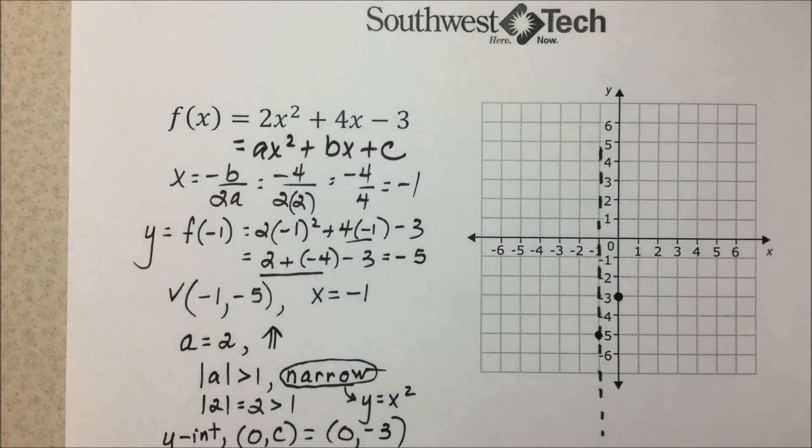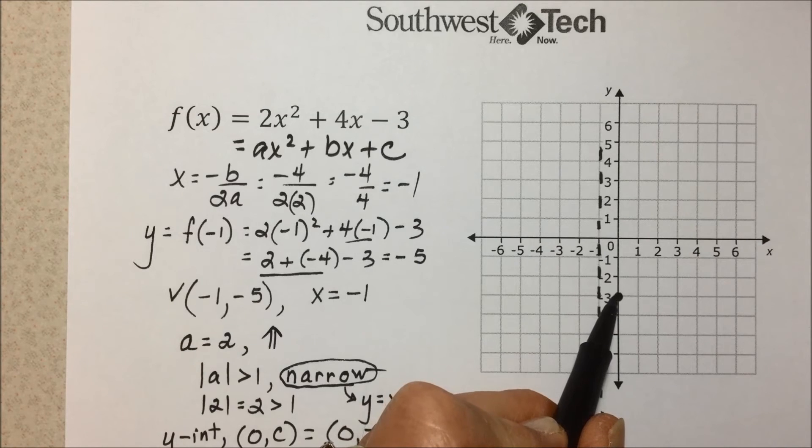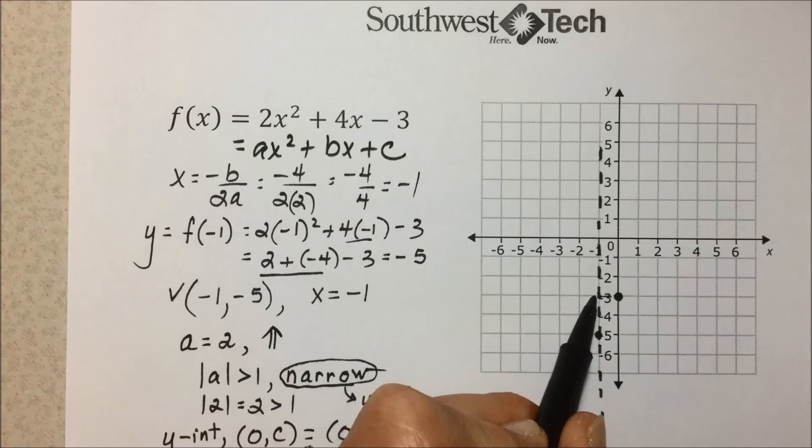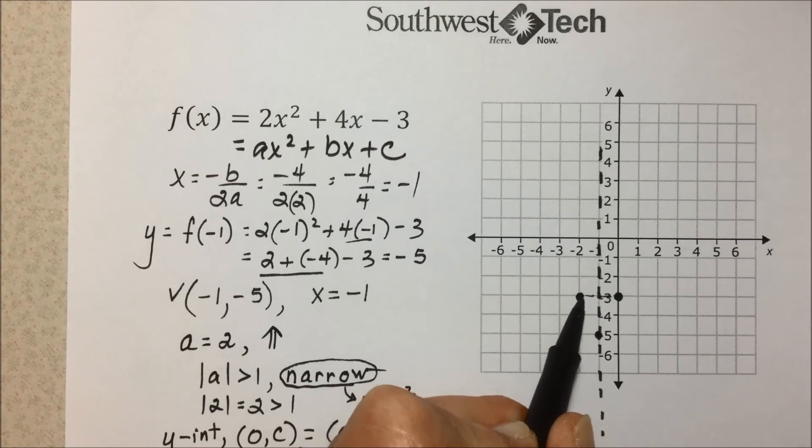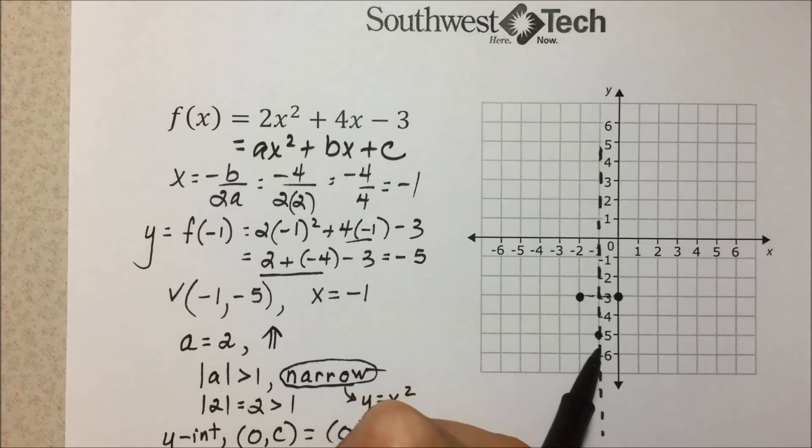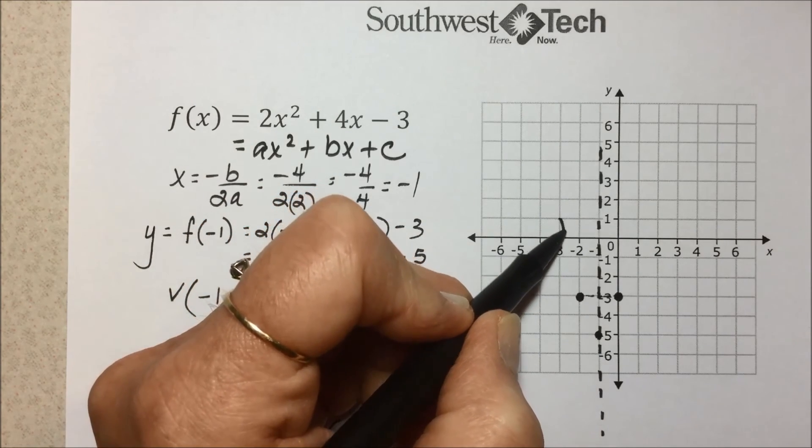We always draw that with a dashed line since it really isn't a solution to the quadratic equation but is used to help us graph. And because we are 1 away at this height, we will be 1 away on the opposite side of our axis of symmetry.